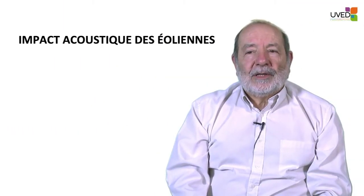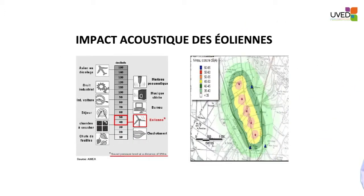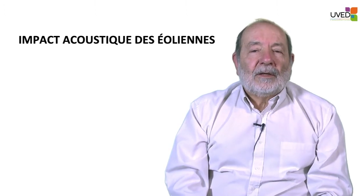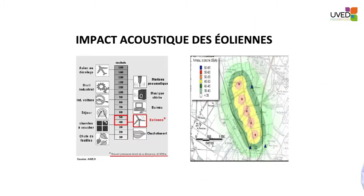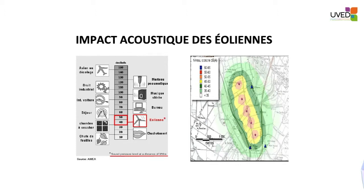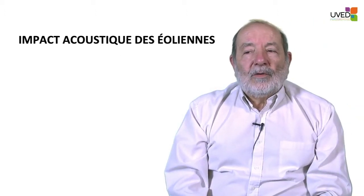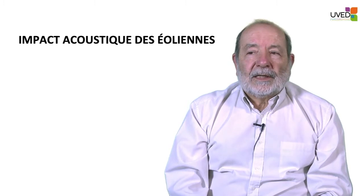What about the noise generated by windmills? On the left-hand side graph, a scale goes from zero to 150 decibels, where zero decibel is the audibility threshold and 150 is the pain threshold. A windmill generates approximately 40 to 50 decibels at 350 meters. On the acoustic map on the right-hand side, above the windmill there is a red spot where the sound level is 50 to 60 decibels, and as we move away from the wind turbine, the noise level decreases to a green area of 40 to 50 decibels.